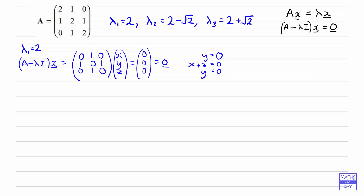So we can now write down an eigenvector — notice I say an eigenvector and not the eigenvector, so there are an infinite number of possibilities. The one thing we know for sure is that y is 0. We can choose a value for either x or z and then write down the other. I'm going to choose x equal to 1, so because x plus z equals 0, z must be negative 1. So that is an eigenvector — multiplying matrix A by that vector gives us 2 times that vector, because this is the eigenvector associated with eigenvalue 2.